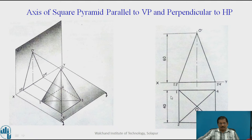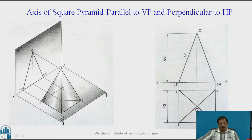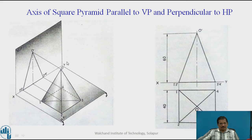So here, while drawing the pyramid, we will take care that the apex will be joined to all the base corners and the axis will be O-O'. After drawing 1, 2, 3, 4 as a top view of the square pyramid and O, project it upwards. Points 2 and 1 will be on the same line, so you will get 1'-2' on the XY line. Then 3 and 4 are on the same projector, giving 3'-4'. Join O'-3', O'-4', O'-1', O'-2'. The axis of the pyramid is 60 mm. The faces of the square pyramid are triangular, unlike the rectangular faces of the prism which also has a square top. This completes the axis projection for the square pyramid parallel to VP and perpendicular to HP.